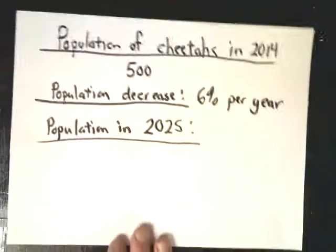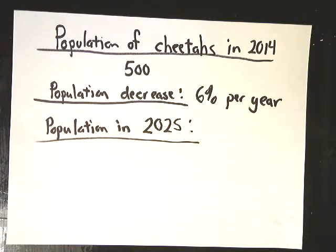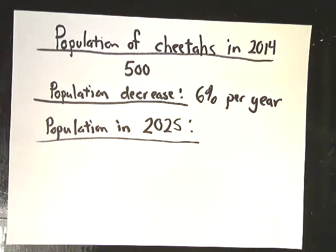One more example. If you have some sort of wildlife refuge and you have a population of cheetahs that you can count — 500 cheetahs — your population is going to decrease at 6% per year. What population can you expect in 2025?